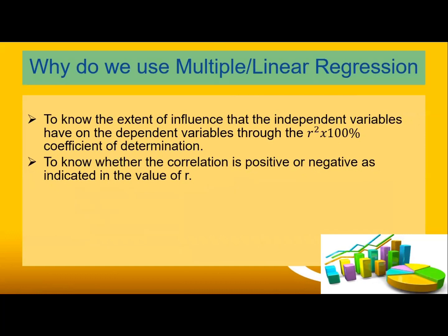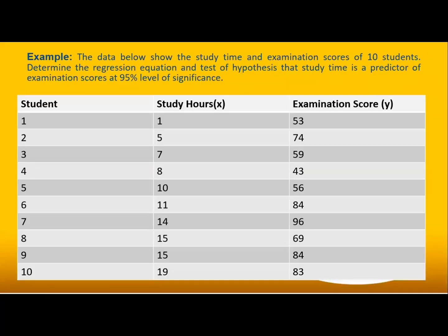Another reason to use multiple linear regression is to know the extent of influence that the independent variables have on the dependent variable through the R-squared — the coefficient of determination — multiplied by 100 percent, and also to know whether the correlation is positive or negative as indicated by the value of the correlation r.